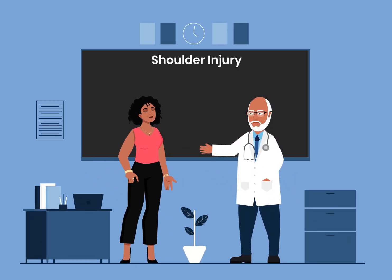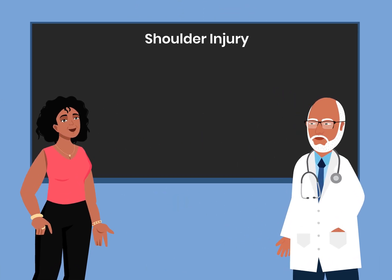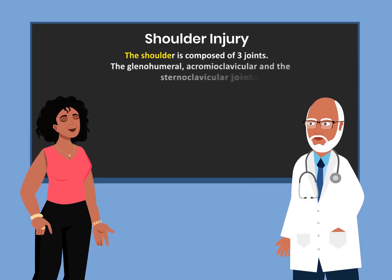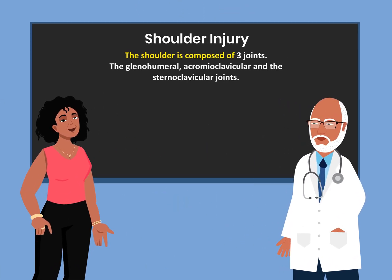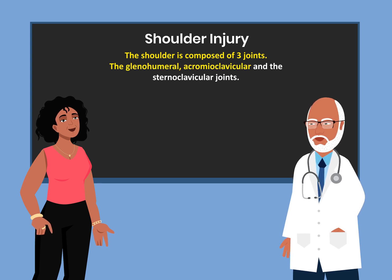Today I want to talk to you about shoulder injuries. The shoulder is composed of three joints: the glenohumeral, acromioclavicular, and the sternoclavicular joints.